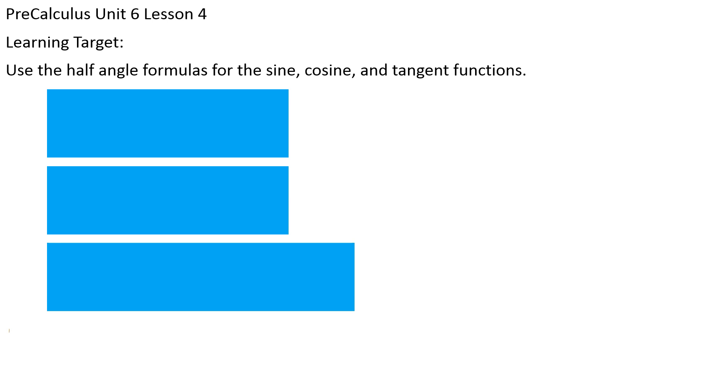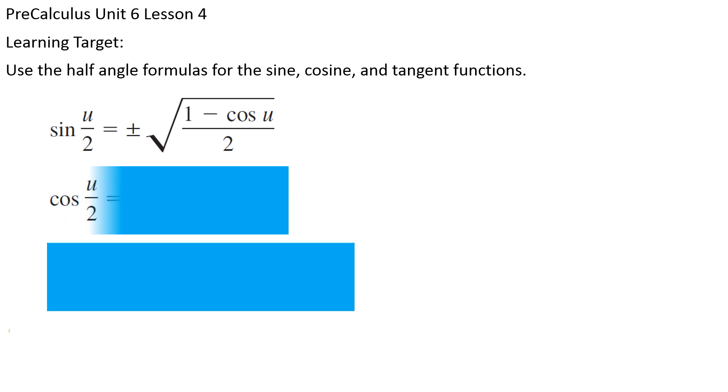So we've got, again, our universal variables, u plus v. So for half angle, sine of u over 2 will be plus or minus square root of 1 minus cosine u over 2. Cosine of u over 2, plus or minus square root of 1 plus cosine u over 2.